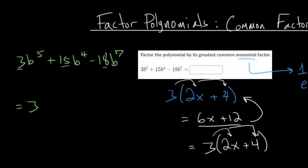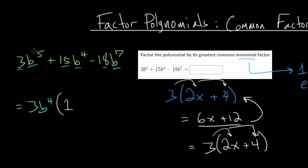Now we consider the variable terms: b⁵, b⁴, and b⁷. What is the largest number of b's that we can divide by so that we don't end up with any fractions? Since b⁴ is the lowest power of b, that is the most we're going to be able to factor out. So we can also factor out a b⁴. Essentially we're dividing each term by 3b⁴. From the first term, dividing by 3 leaves 1, and dividing b⁵ by b⁴ leaves b¹.